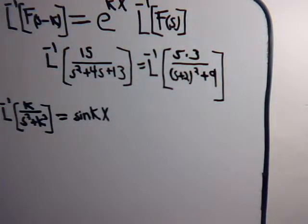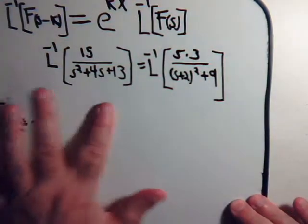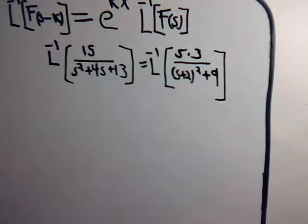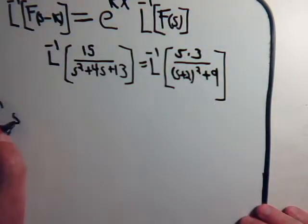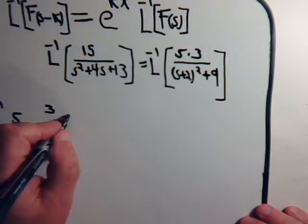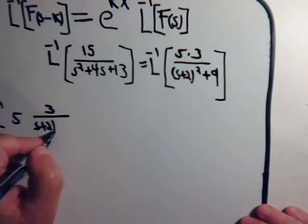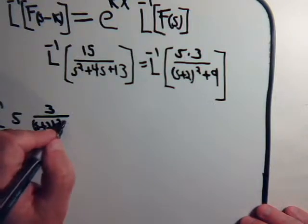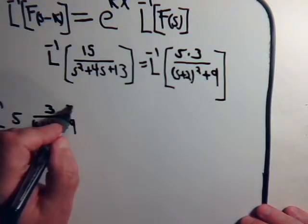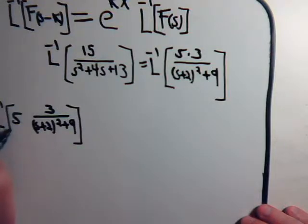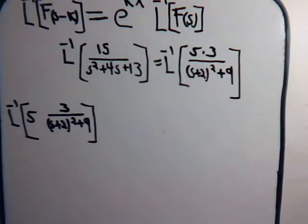So we can rewrite our inverse Laplace transform. For a moment we'll just keep it like this: inverse Laplace transform of 5 times 3 over s plus 2 quantity squared plus 9. So that's the entity there that we want to take the inverse Laplace transform of.